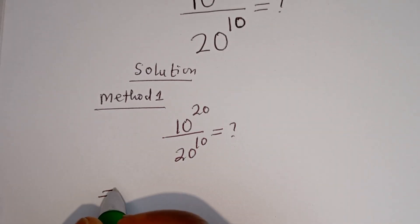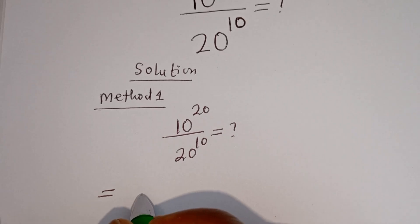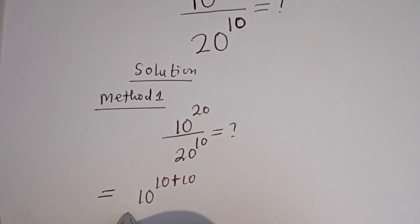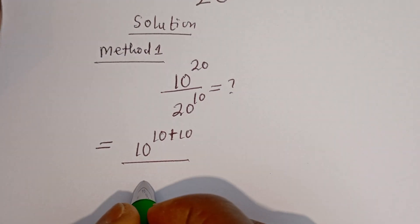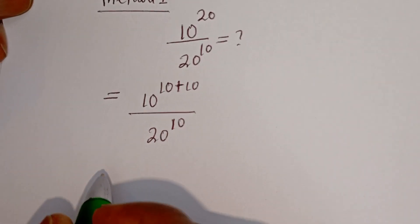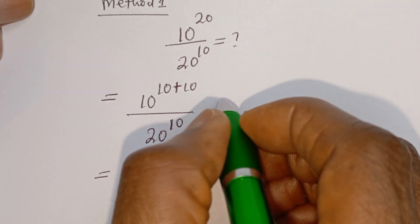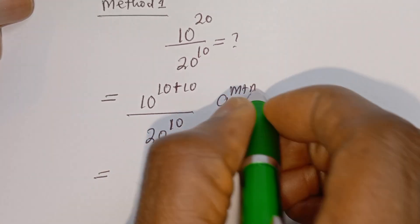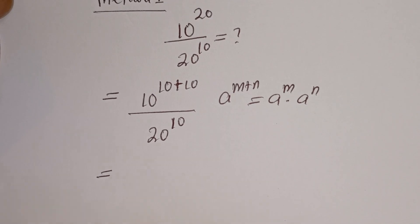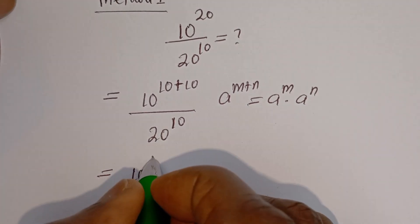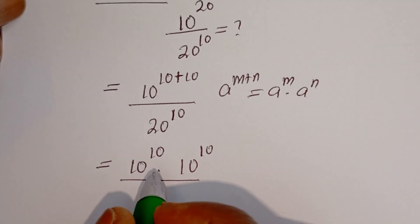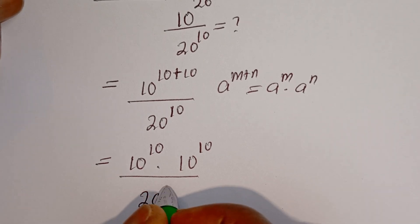This is equal to 10 to the power of 20, which can be written as 10 to the power of 10 plus 10, divided by 20 to the power of 10. Take note that if you have a to the power of m plus n, this is equal to a to the power of m multiplied by a to the power of n. Then we have 10 to the power of 10 multiplied by 10 to the power of 10, divided by 20 to the power of 10.